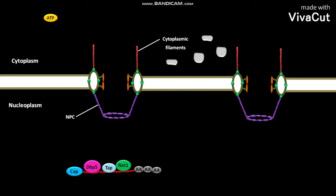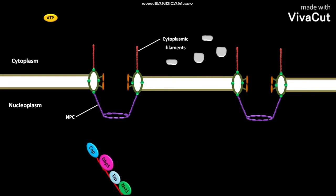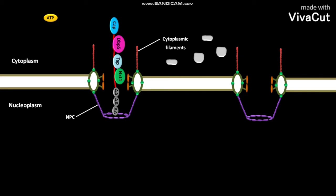The TAP-NXT1 and other mRNA exporters bound along the length of mRNA assist its export through NPC. As the mRNA complex is transported through an NPC,